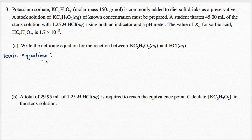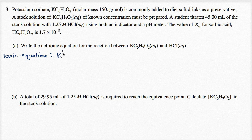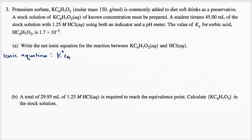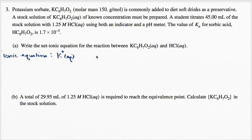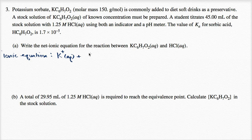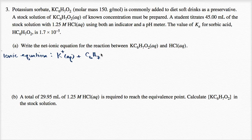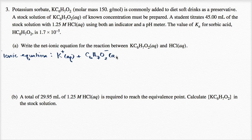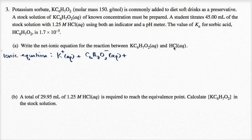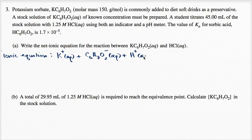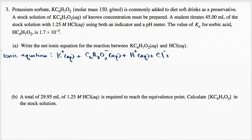So the potassium sorbate, we can write that as, it's going to be a potassium ion dissolved in an aqueous solution, plus the C6H7O2, this is also going to be an ion dissolved in the aqueous solution, plus the hydrochloric acid will dissolve, so you have the hydrogen proton dissolved in the aqueous solution, plus the chloride ion, or anion, so that's going to be in our aqueous solution.